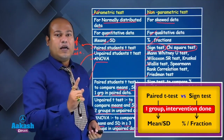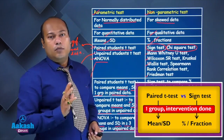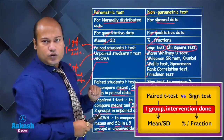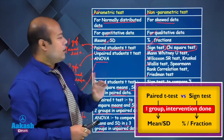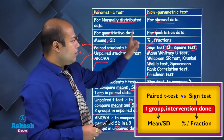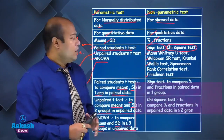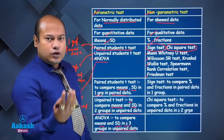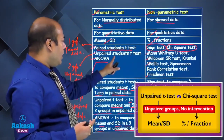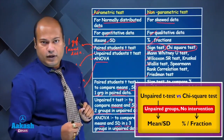In both cases we have paired data and one group, but the difference is that for the paired student t-test we compare in terms of means and standard deviation, whereas for the sign test we compare in terms of percentage and fraction. The chi-square test is analogous to the unpaired student t-test.